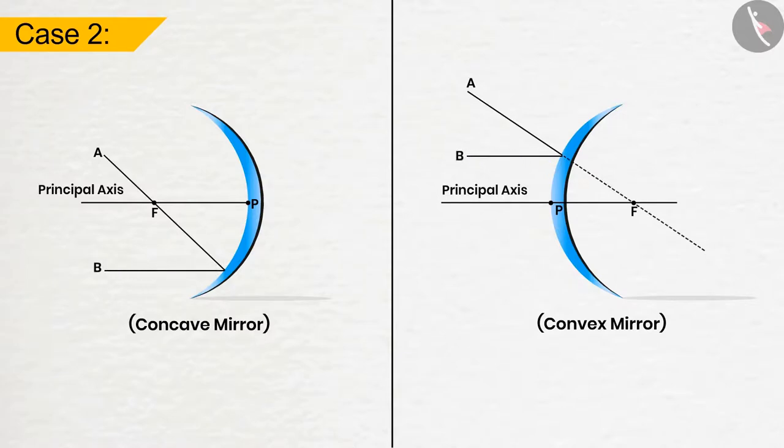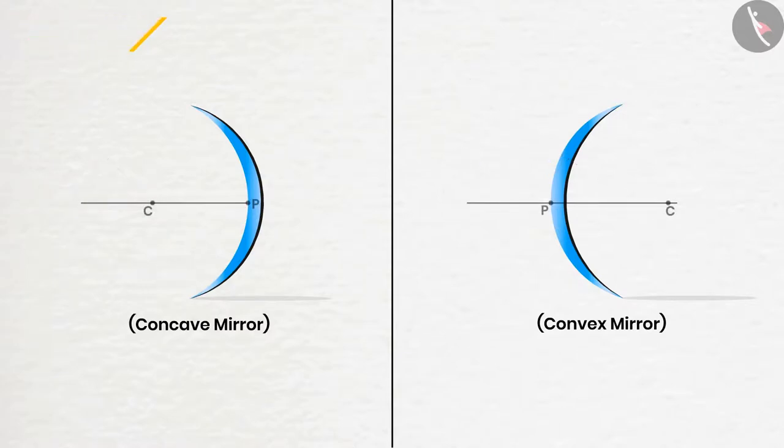Case 3: If the ray of light passes through the center of curvature of the concave mirror or appears to go towards the center of the curvature of the convex mirror, it will travel back from the same path after reflection.